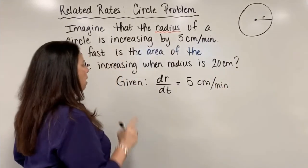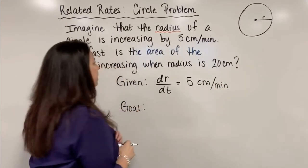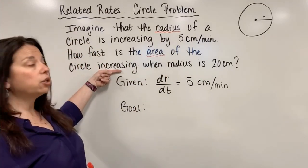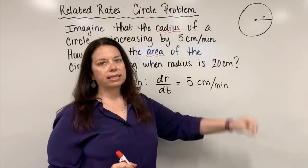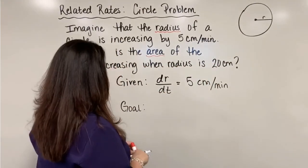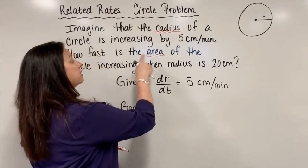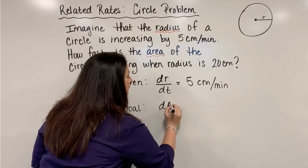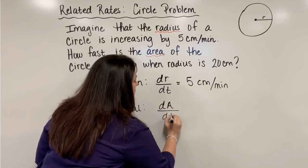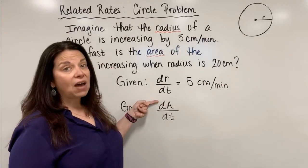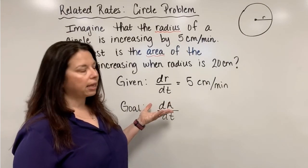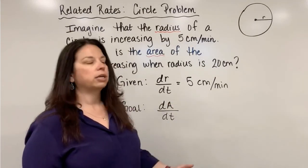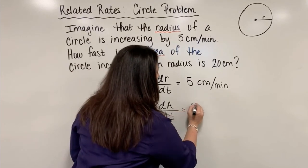What our goal is to find is how fast the area is changing when my radius hits exactly 20 centimeters. So our goal in this problem is to figure out how fast the area is changing. Notationally, we would describe that as dA/dt, which tells us how fast the area, we call area capital A, how fast the area is changing with respect to some amount of time that we're going to measure in terms of minutes. We don't know what this is; we're going to find it.